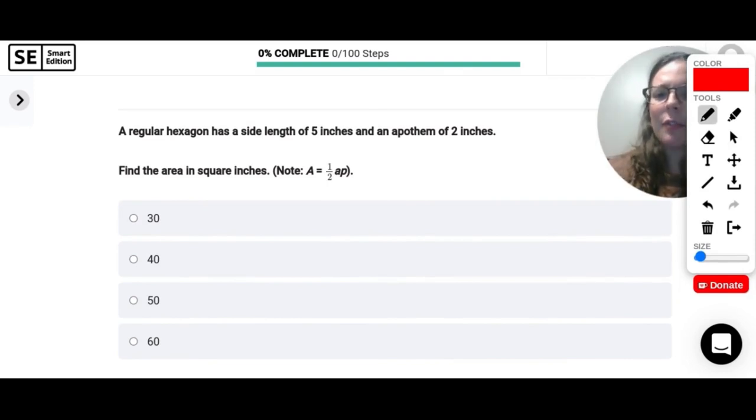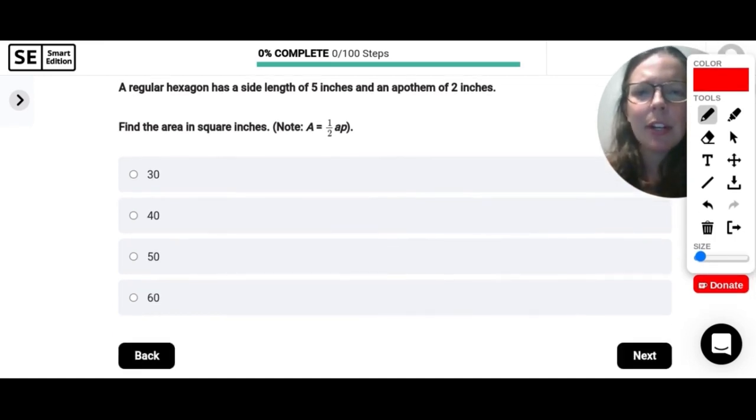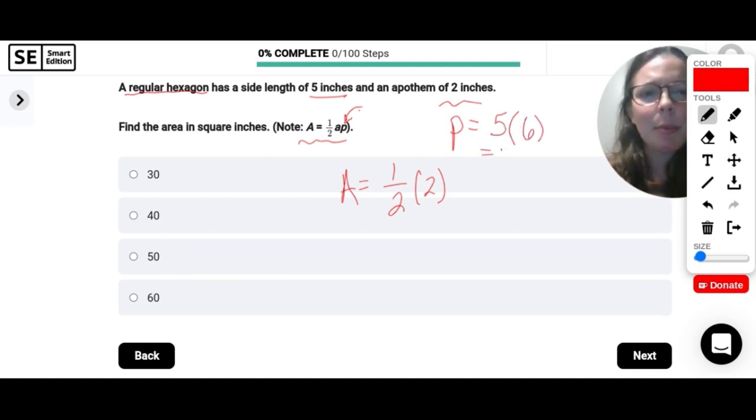A regular hexagon has a side length of 5 inches and an apothem of 2 inches. Find the area in square inches. So we're given this area formula. So area is equal to one half times the apothem, which is 2. And my P here is perimeter. So the perimeter of my hexagon, if I have a regular hexagon with a side length of 5, that means that all of the sides are 5. So to find the perimeter, we would have to do 5 times how many sides there are. A hexagon has 6. So my perimeter is 30. So one half times 2 times 30. So these would actually cancel out. And my area would just be 30 square inches.